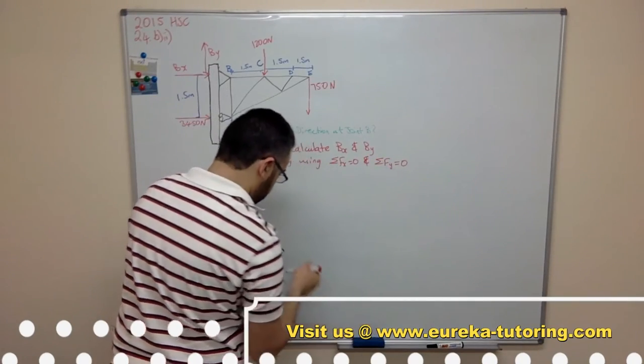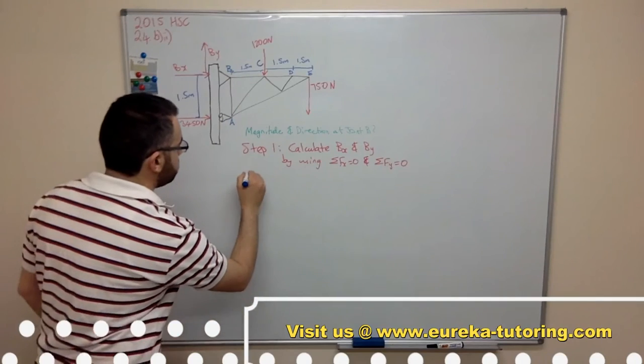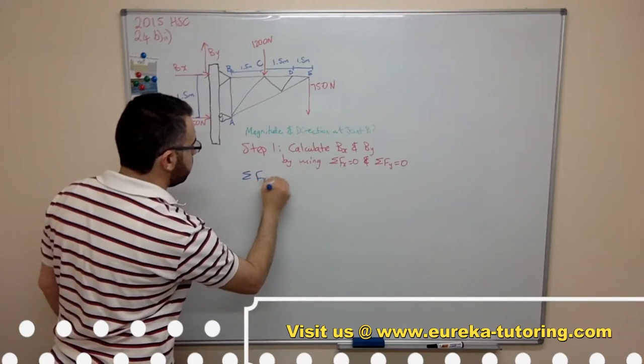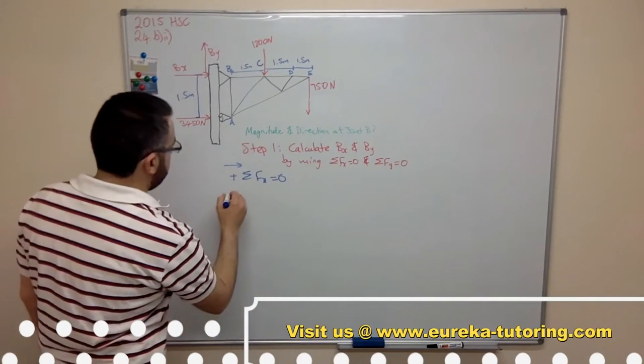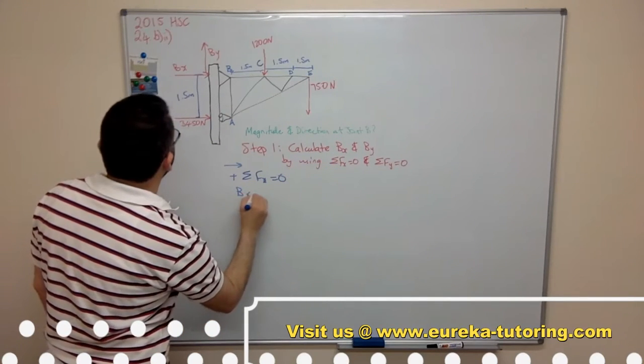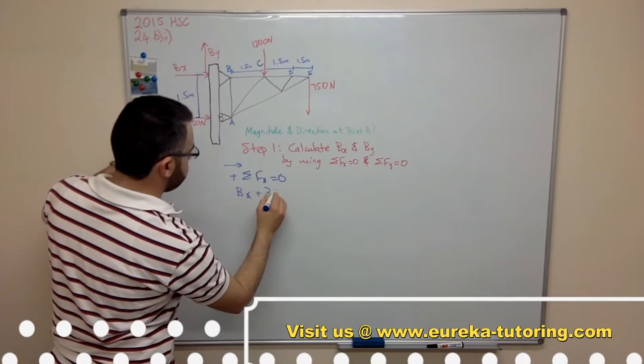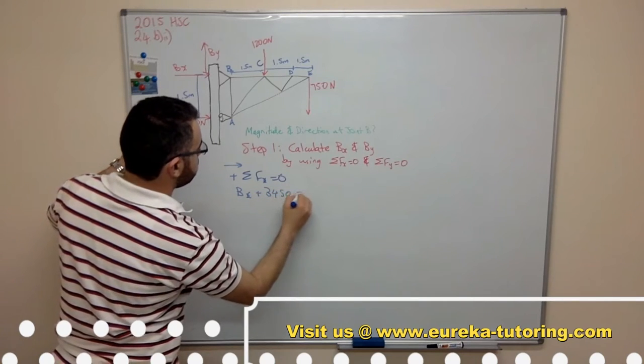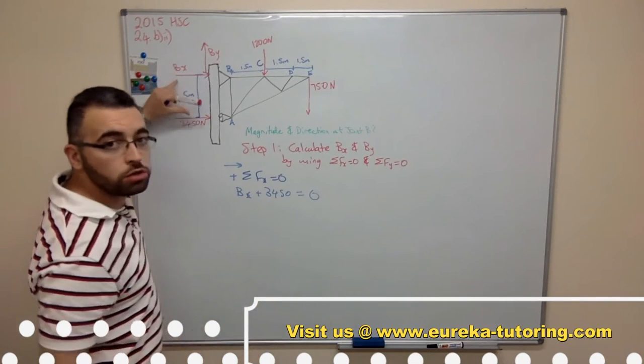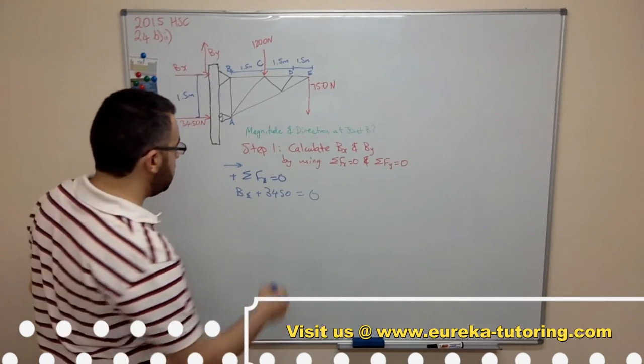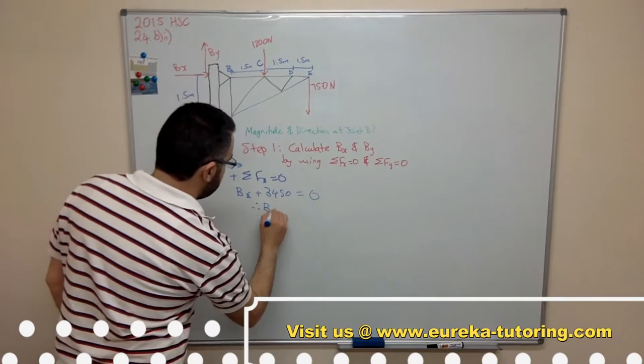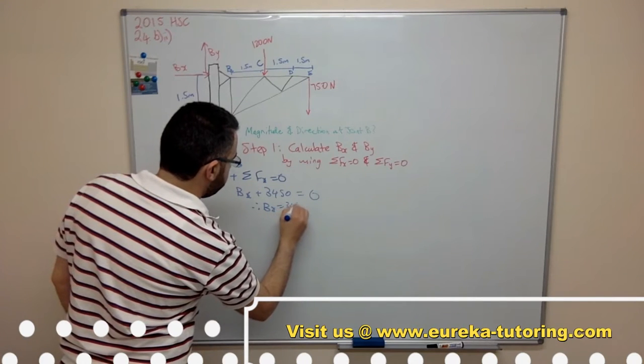So let's do that. Sum of forces in the x-direction equals 0 and I consider this direction to be positive. So I have Bx plus Ax, which we found to be 3450 newtons, equals 0 as these are the only two horizontal external forces. So therefore Bx equals negative 3450 newtons.